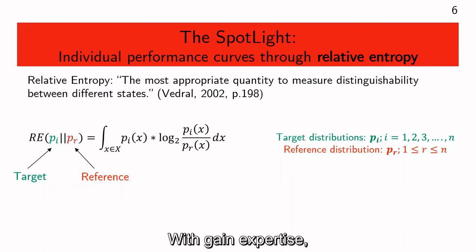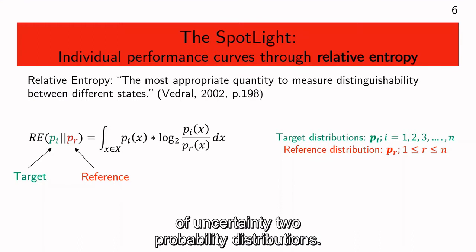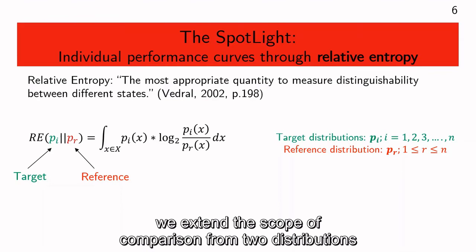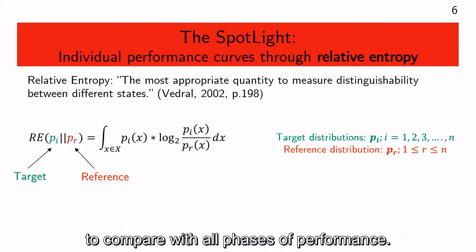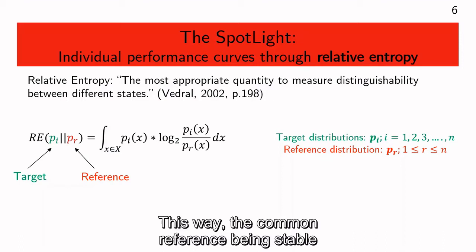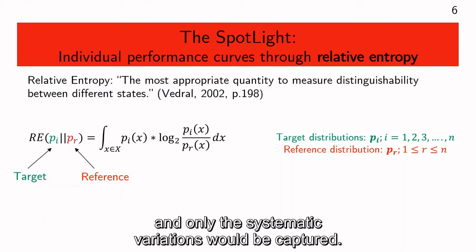For skill acquisition, we rephrase this theorem: with gain of expertise, uncertainty of choices would reduce. Using this principle to capture systematic changes in uncertainty, we instrumented the spotlight with relative entropy — a measure of the difference between the states of uncertainty of two probability distributions. For the spotlight, we extend the scope of comparison from two distributions to any finite number. First, we set a common reference in a stable phase of performance to compare with all phases. The common reference being stable would have no systematic variations, but both reference and targets would have random variations. As relative entropy is the difference between two states of uncertainty, the random variations cancel out and only the systematic variations are captured.